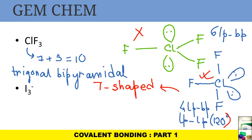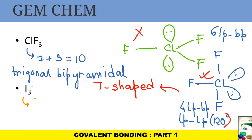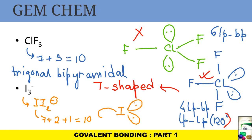In a TBP structure, lone pairs always occupy the equatorial site to minimise steric repulsion. For I3⁻, written as [I–I–I]⁻: iodine has seven electrons, plus two from the two attached iodines, plus one for the negative charge, giving ten — a TBP structure. The three lone pairs occupy the three equatorial positions and the two iodines occupy the two axial positions. The shape is therefore linear.